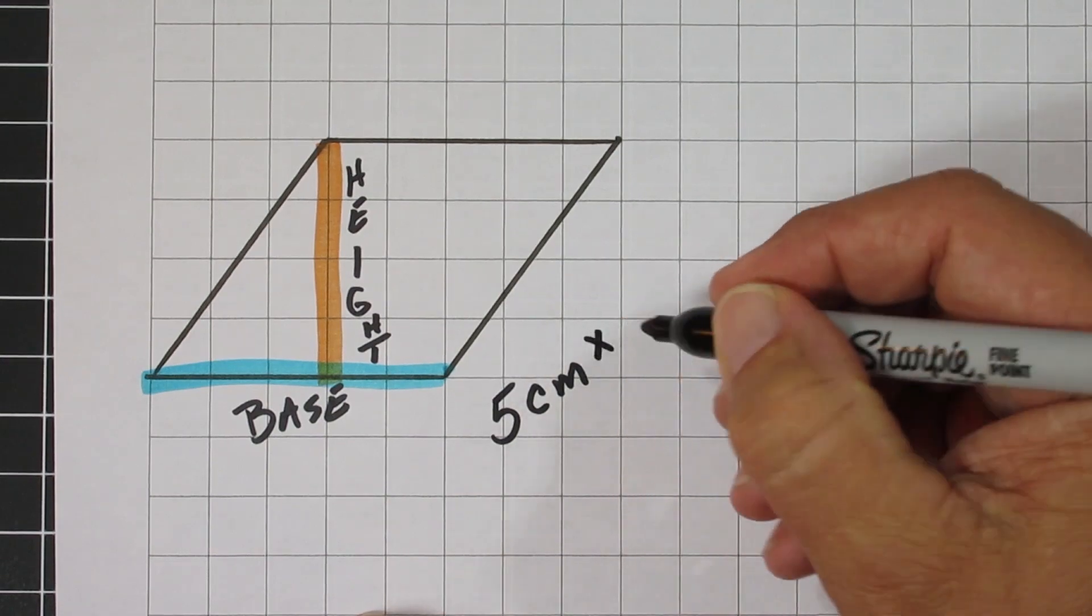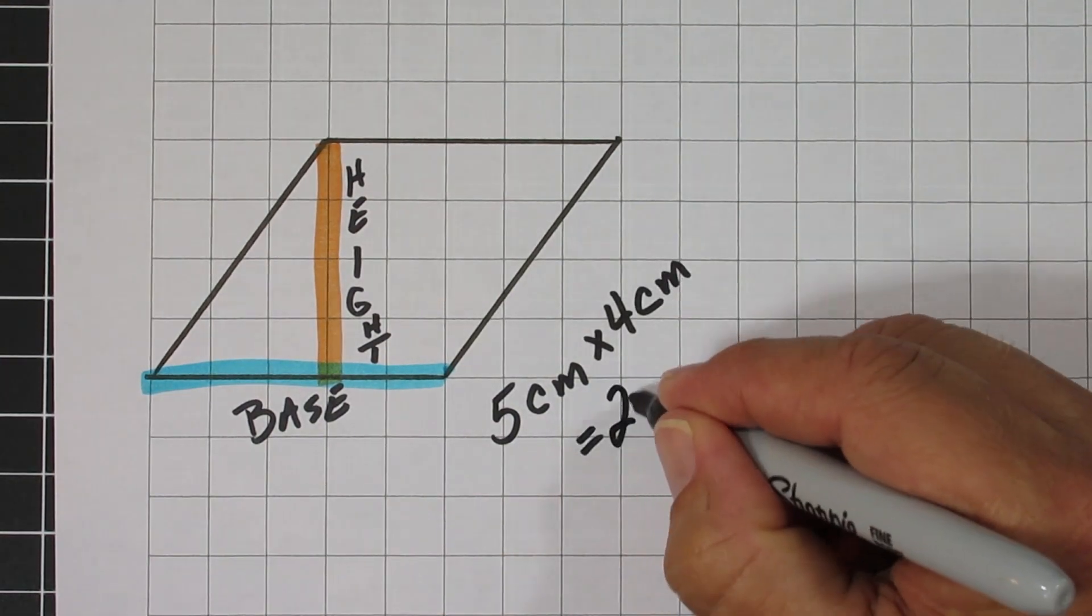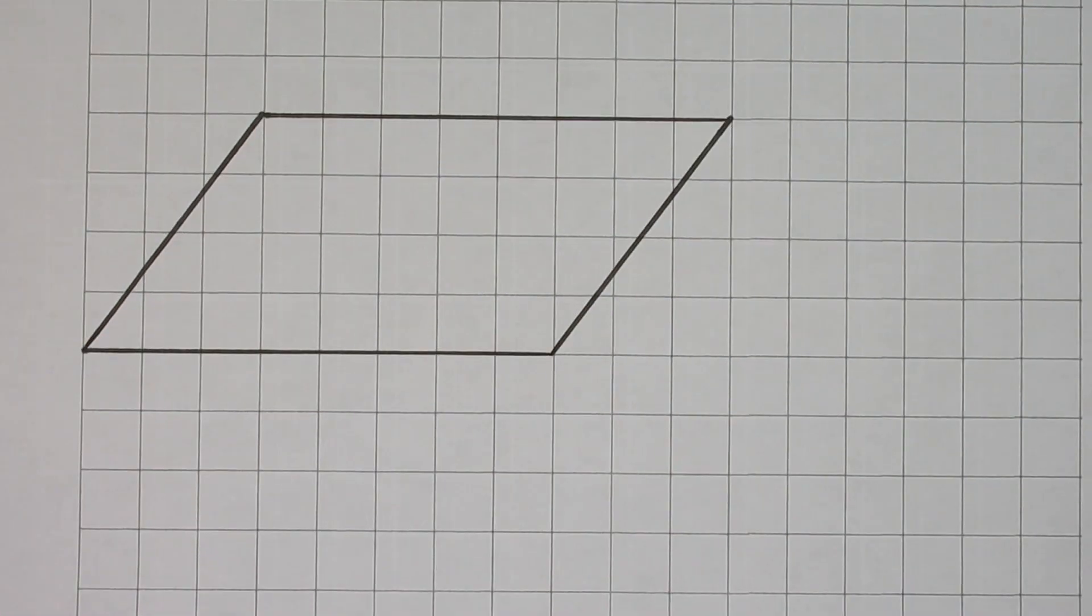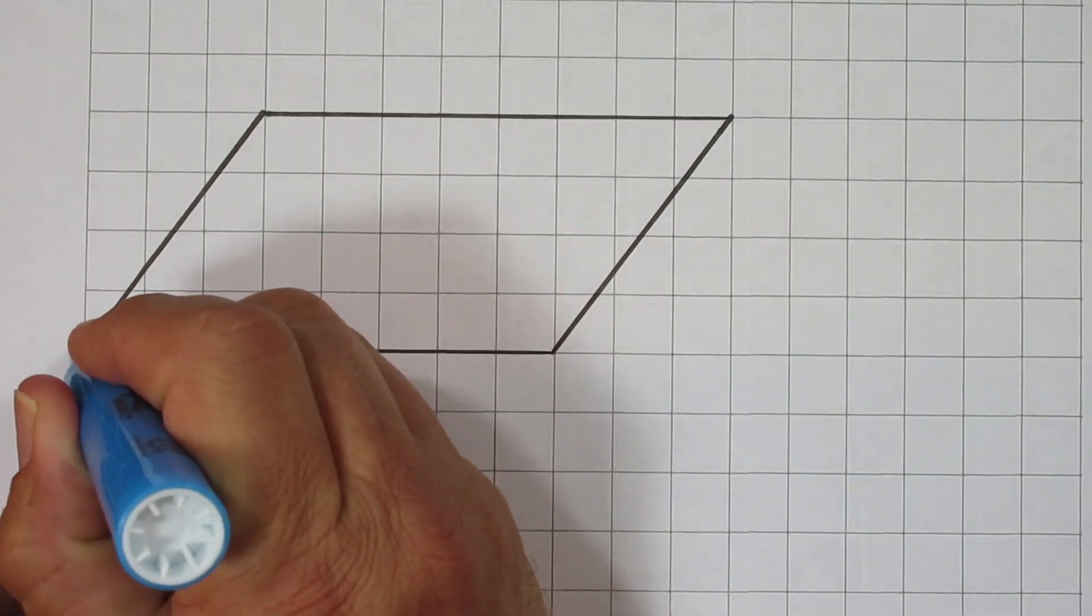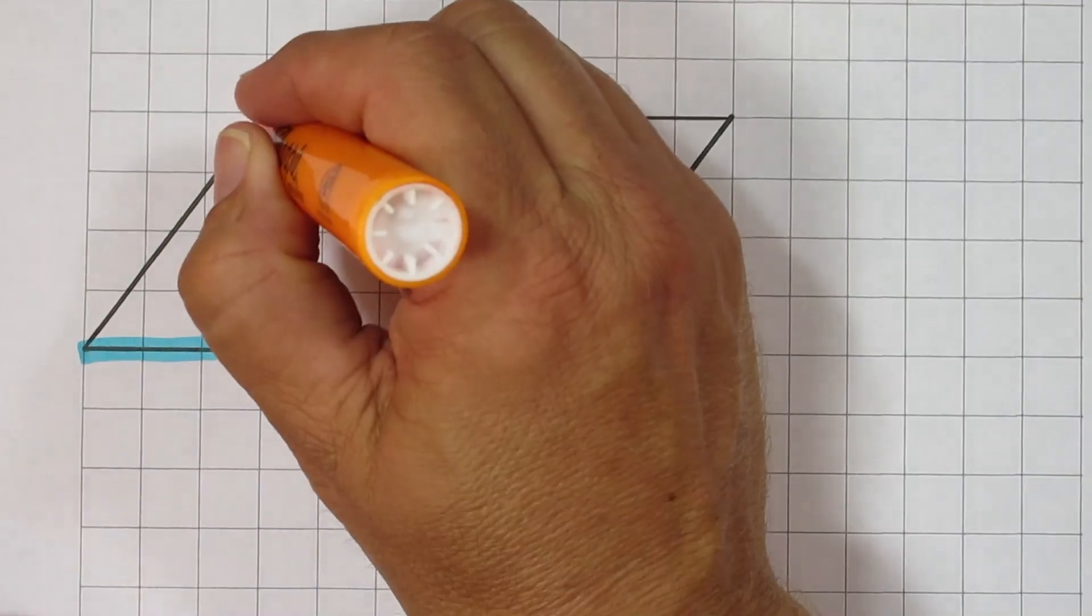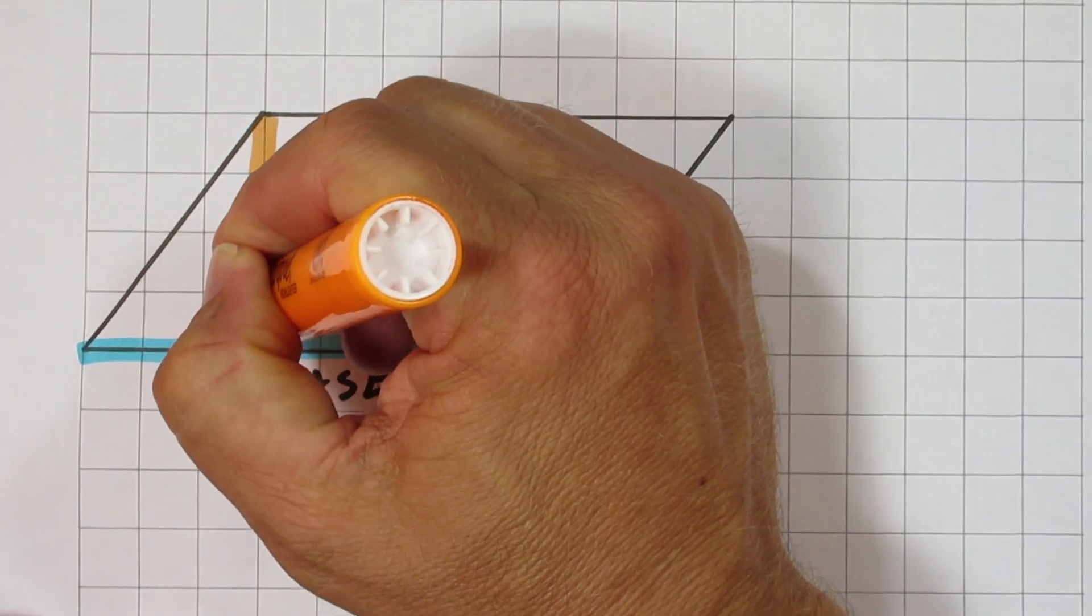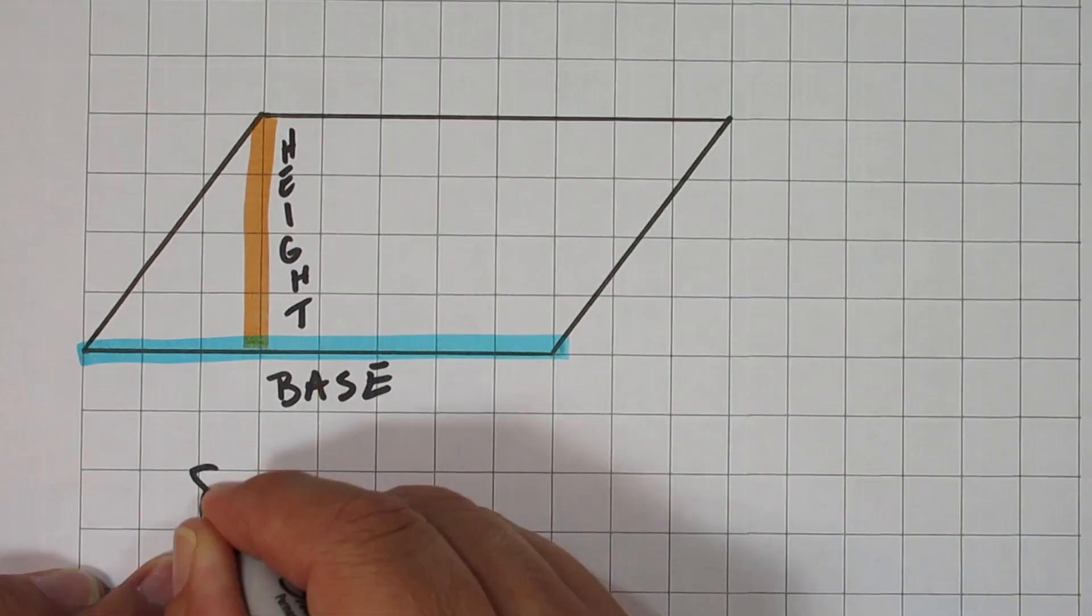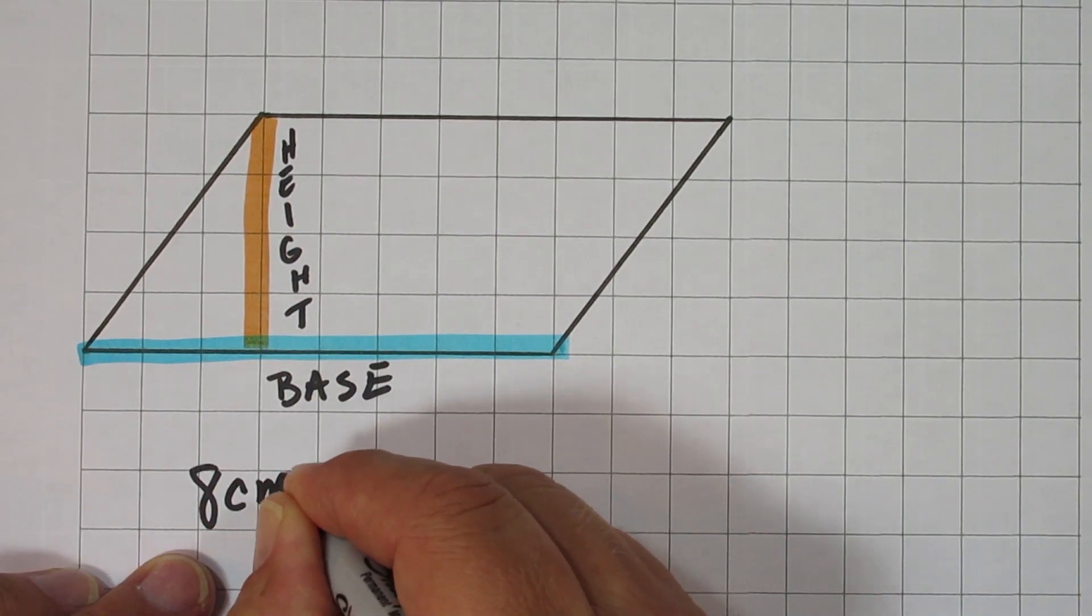And finally, this is also going to work when we use parallelograms. We can use base times height with this one as well. So this one has a base of 8 centimeters. It has a height of 4 centimeters. So if we take our base of 8 times our height of 4 centimeters, we're going to get 32 centimeters squared.